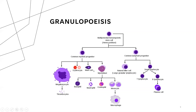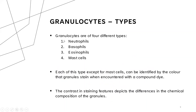Other things are also produced from the same pathway, like monocytes and macrophages, which are not granulocytes. The granulocytes are the mast cells, the basophils, the neutrophils, and the eosinophils. They are called so because of the presence of granules within the cytoplasm.